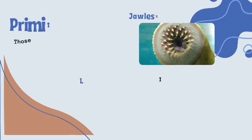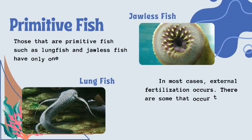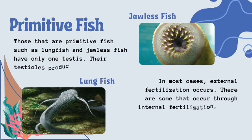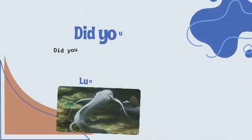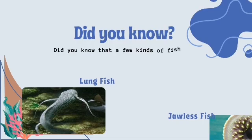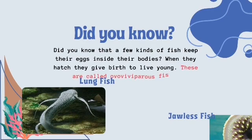Those that are primitive fish, such as lungfish and jawless fish, have only one testis. Their testicles produce sperm cells. In most cases, external fertilization occurs. There are some that occur through internal fertilization, while a few fish reproduce by bearing live young. Did you know that a few kinds of fish keep their eggs inside their bodies? When they hatch, they give birth to live young.